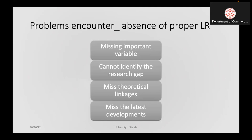Another problem is missing the theoretical linkages. There are theoretical linkages we need to write, like theoretical implications. To write these, we need to understand the existing theoretical underpinnings, and we may miss the latest developments. These are the problems encountered due to the absence of proper literature reviews.